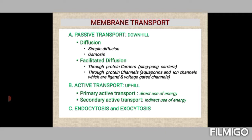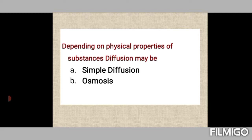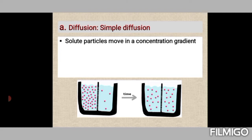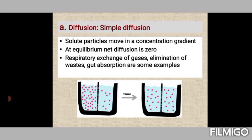Simple diffusion works as follows: solute particles move down a concentration gradient because molecules collide with each other, moving from a region of higher concentration to lower concentration using the energy of collision. The molecules dissolve in the hydrophobic phospholipid bilayer and diffuse across it. This is a slow process, and at equilibrium the net diffusion is zero. Examples include respiratory gas exchange, elimination of waste, and absorption from the intestine.